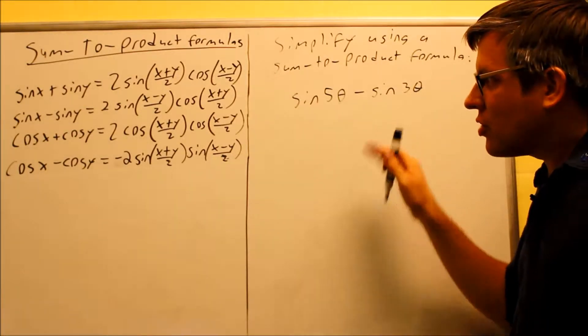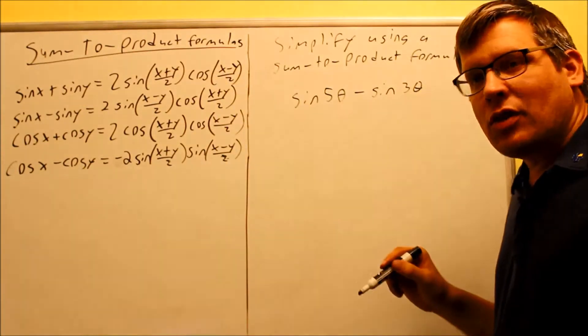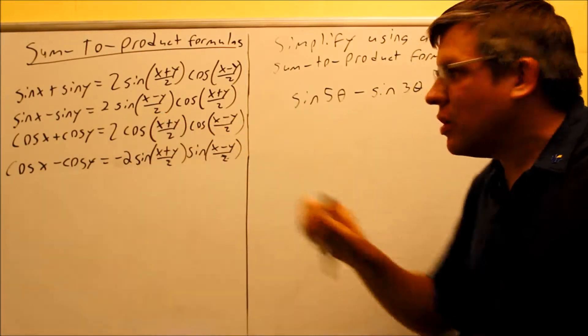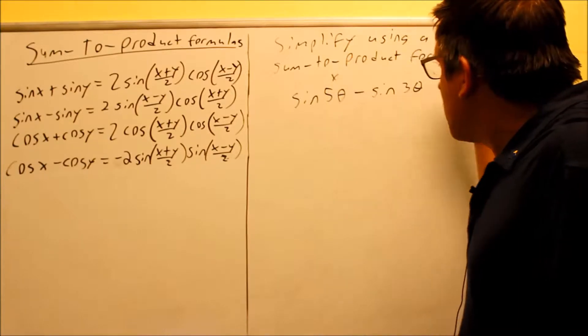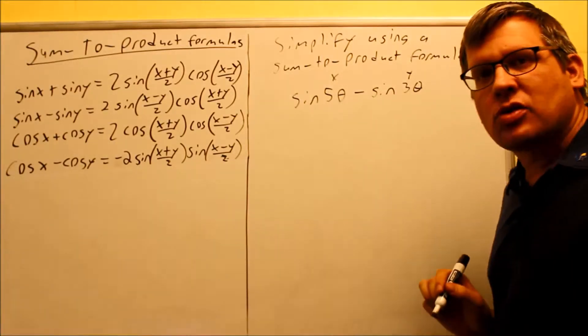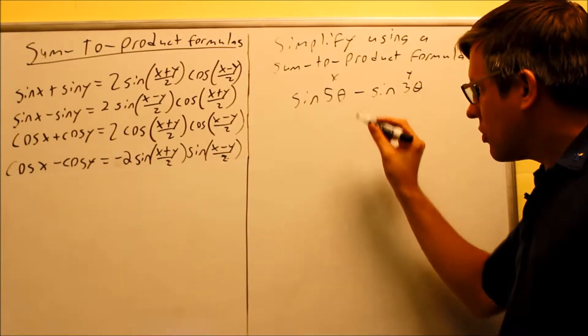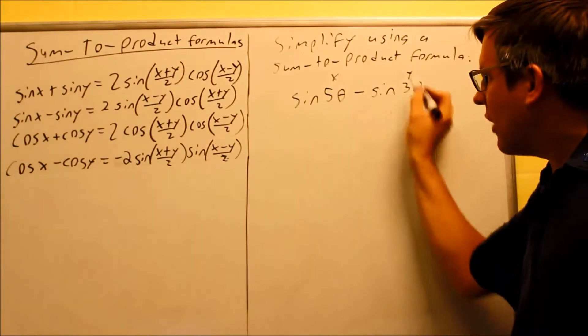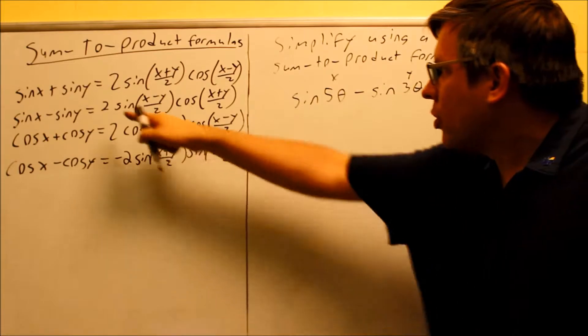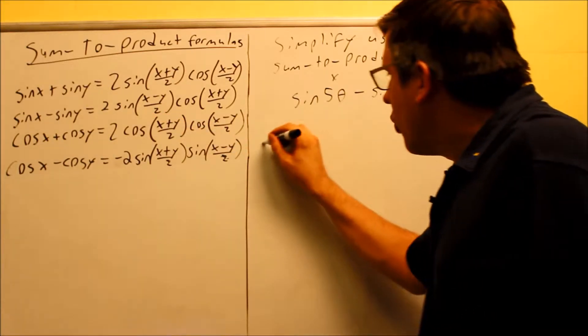What you want to do is match it up with one of the formulas that we have here, and this is going to match up with the second formula. Whenever you have subtraction, the first one must always be x, and the second one must always be the y. You can't switch those. So with addition, you can, but with subtraction, you can't, so we have to use it as is. We're going to put it directly into the second formula.